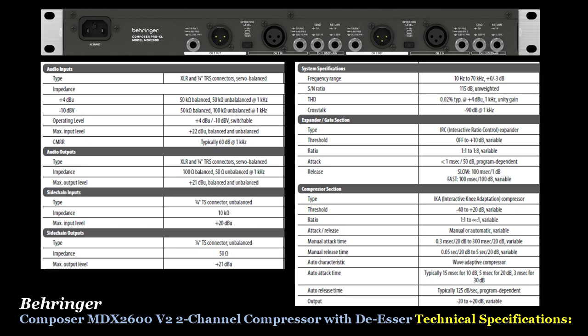The expander gate section uses an IRC type and covers threshold, ratio, attack, and release specifications. The compressor section uses an IKA type and includes threshold, ratio, attack and release — both manual and auto — auto attack time, auto release time, and output specifications. You can pause the presentation at any time to review the detailed specifications.